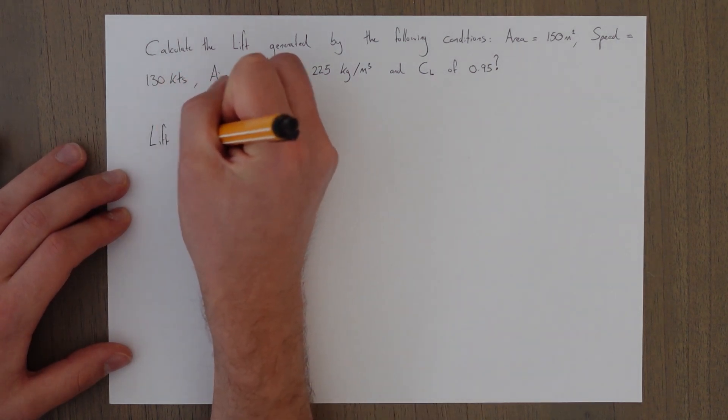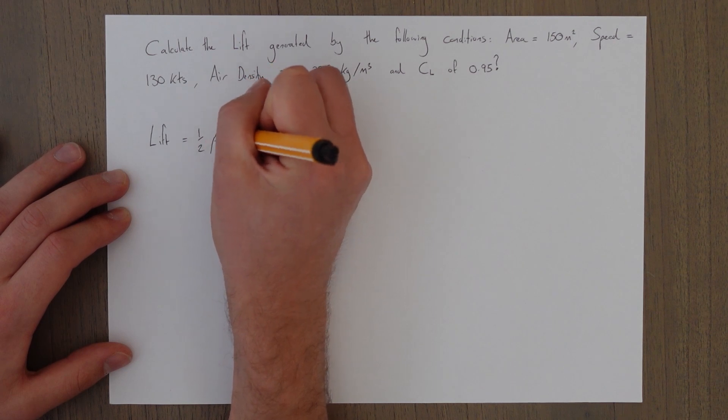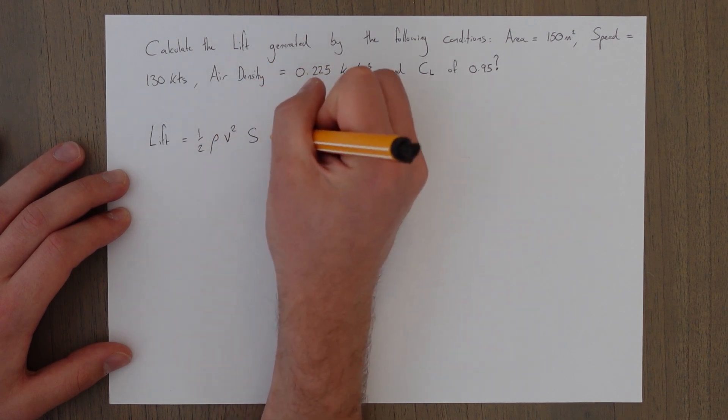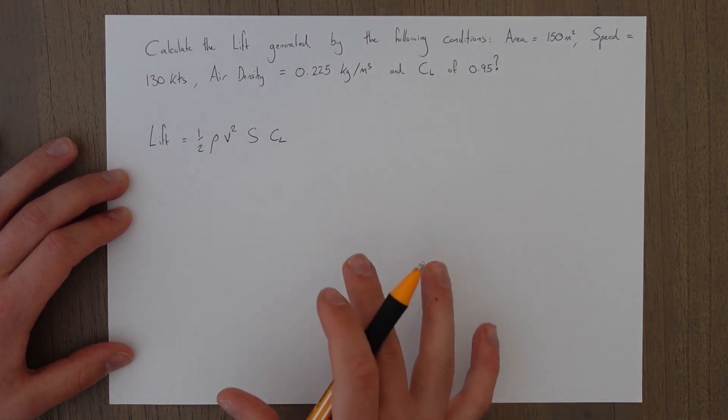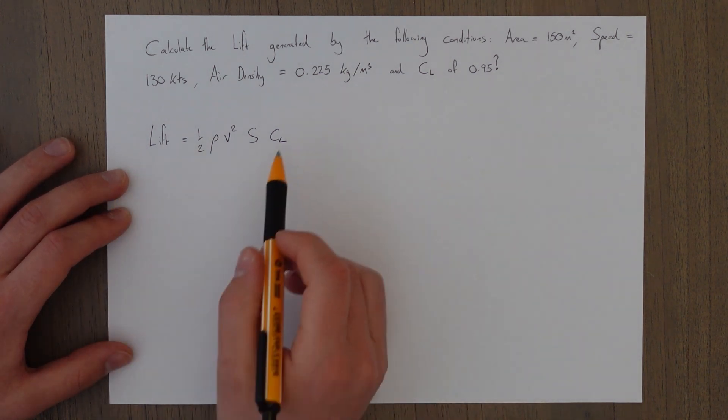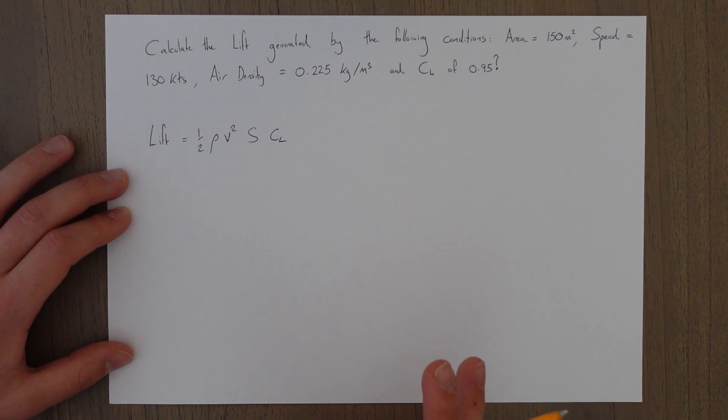So again it's very simple: lift equals a half rho v squared S CL. The only thing of importance to really note about this equation is it uses SI units, meaning that we have to convert things back to the fundamental units used in the physics calculations.